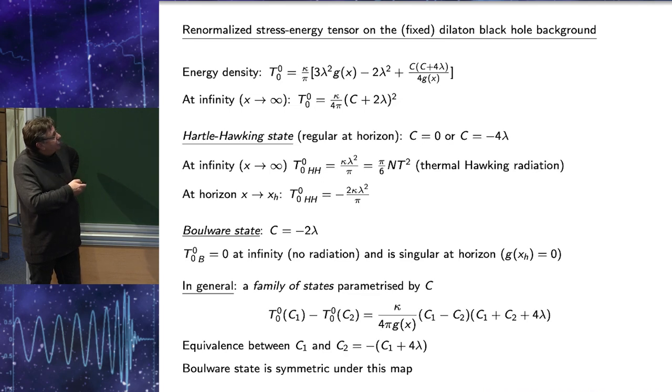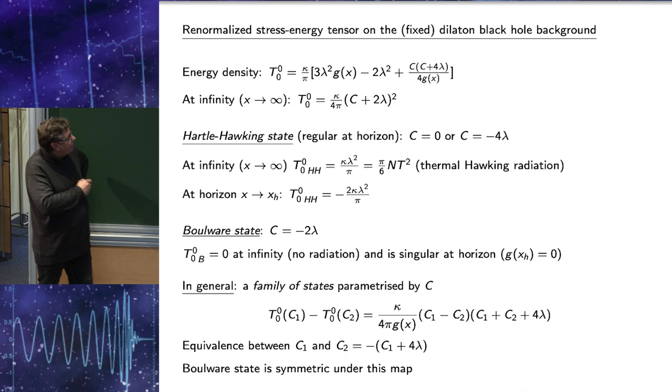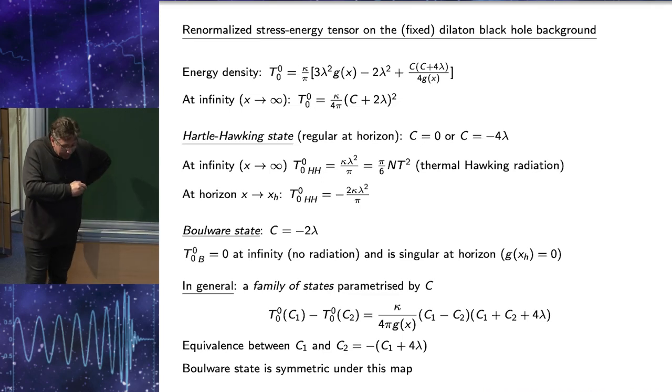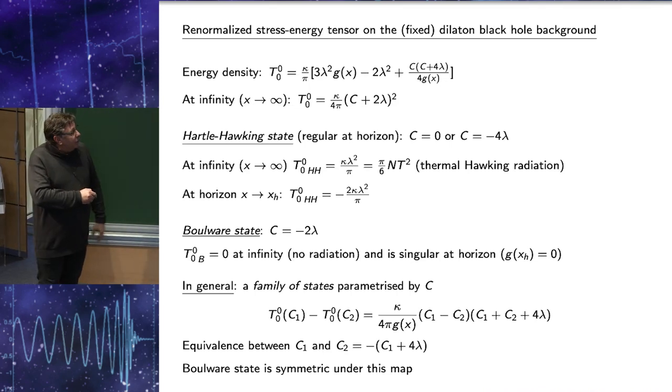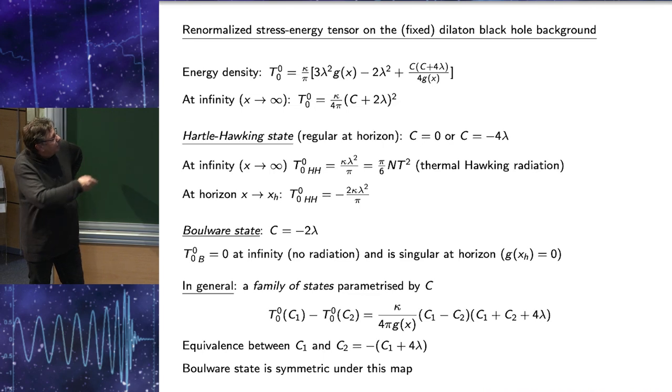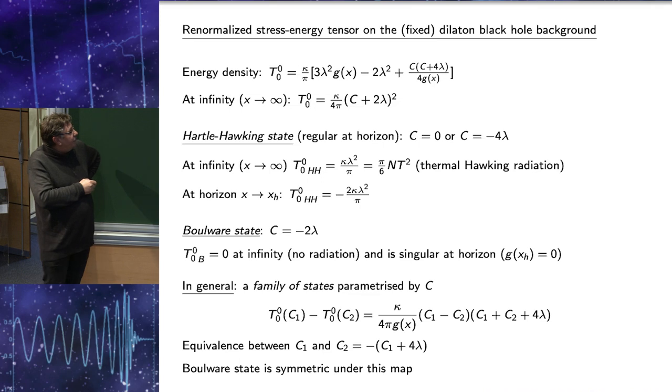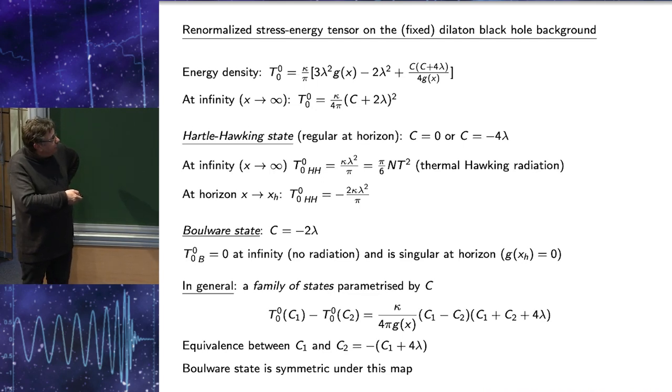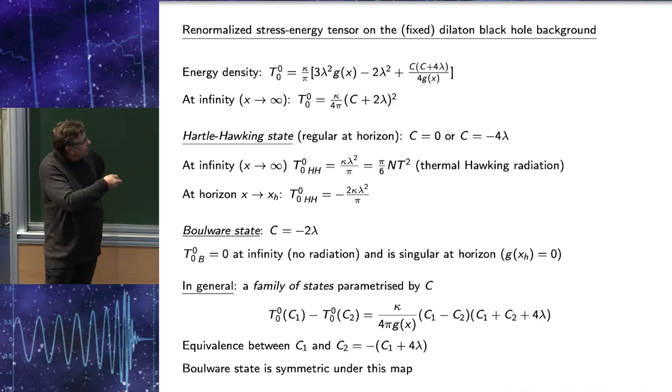Now, Boulware state, by definition, is the state which doesn't convey any radiation at infinity. There is only one state value, C minus 2 lambda. At infinity, it is 0. But of course, it is singular at the horizon. But in general, we have a family of states parameterized by C. There is interesting symmetry. If I take difference of energy density for two values of C, it is 0 not only when C1 equals C2, but also when C2 and C1 are related by this relation. That explains why I have two values of C for Hartle-Hawking. And Boulware state is symmetric under such a map.